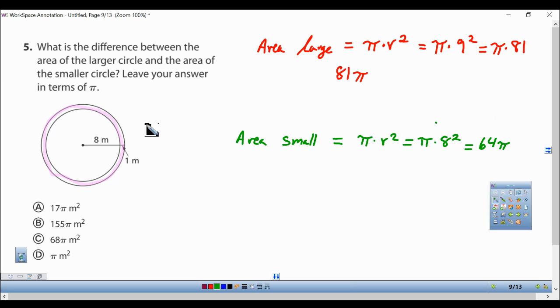Now we want to find the area in between them, so we're going to do 81 pi minus 64 pi. 81 minus 64 is 17, so the answer is going to be 17 pi.